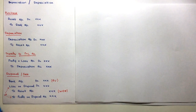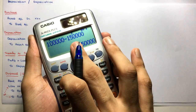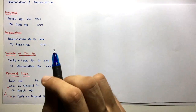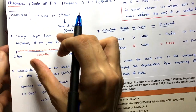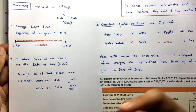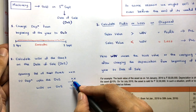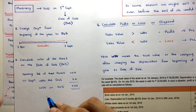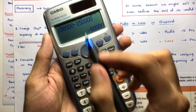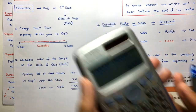To clarify: the WDV used in the disposal entry is after charging proportionate depreciation on the date of sale. For example, if opening balance is 81,000 and depreciation is 1,000, then WDV on date of sale = 81,000 − 1,000 = 80,000. You compare this 80,000 with the sale value to find profit or loss.